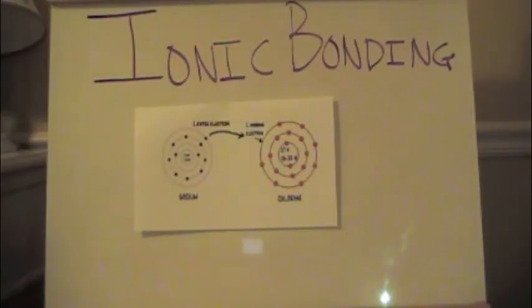Ionic bonding is the complete transfer of valence electrons between atoms. It is a type of chemical bond that generates two oppositely charged ions.